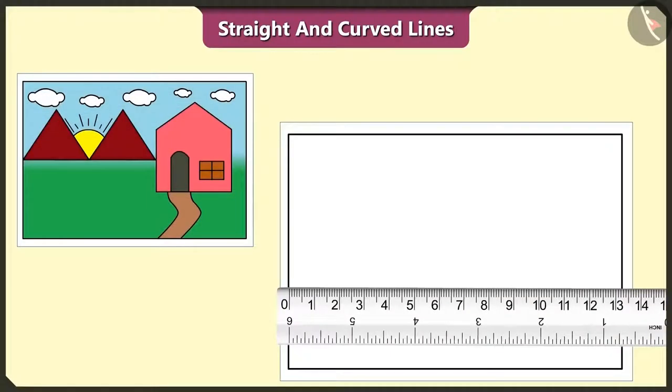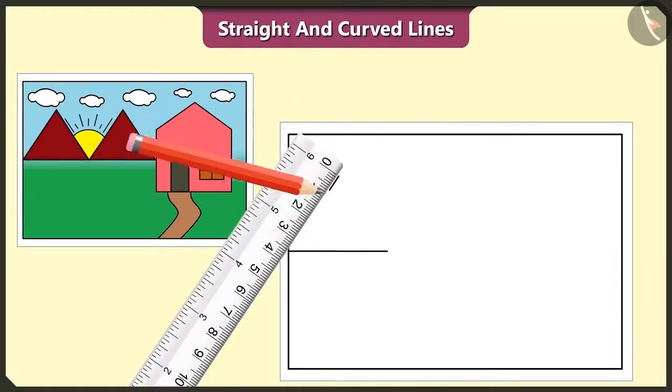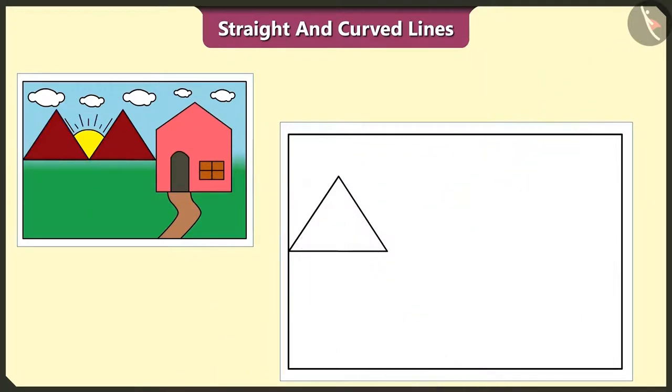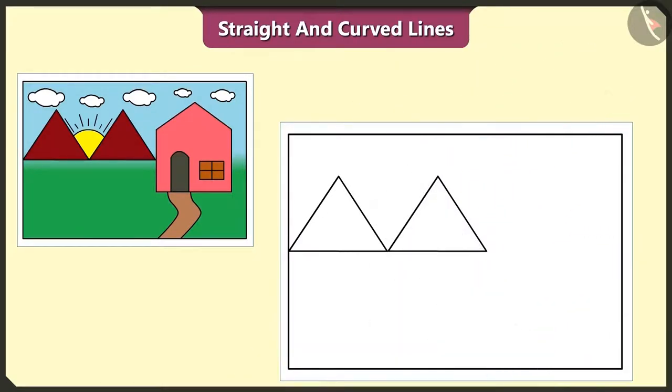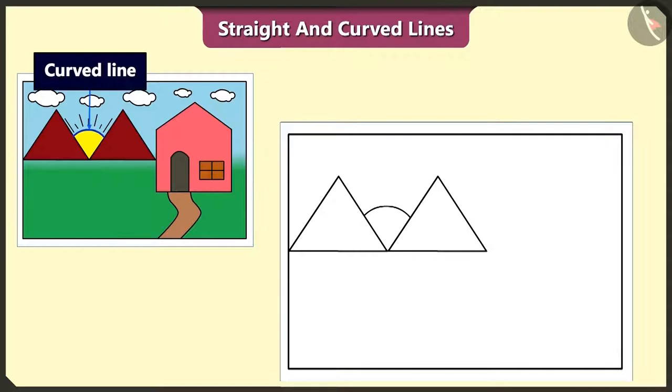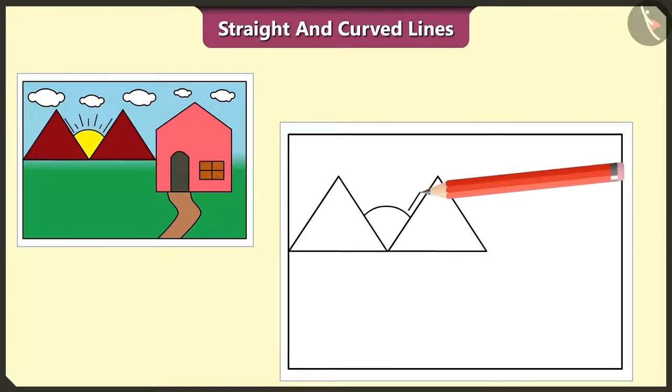First of all, let's draw a hill with the help of scale on paper. Yes, this hill is made of three straight lines. And I made a similar hill beside it like this. Oh wow, let's draw one sun like this with the curved lines between these two hills made up of straight lines. And draw sun rays using straight lines like this.